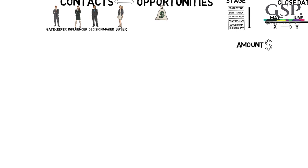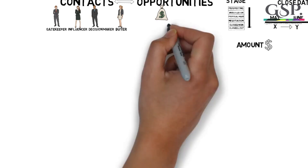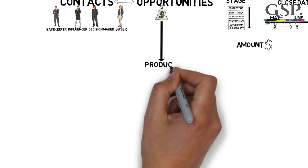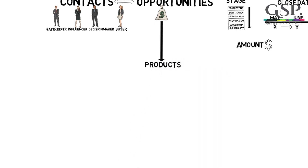The third key piece of information is the amount. This is the revenue — the sales value of the opportunity. Where does that amount come from? Well, you can just type it in. But a much better way is to use products. Products are the goods and services that you sell via an opportunity.